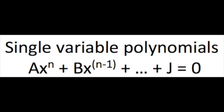Single variable polynomials are equations of the following form: ax^n + bx^(n-1) + ... + j = 0.